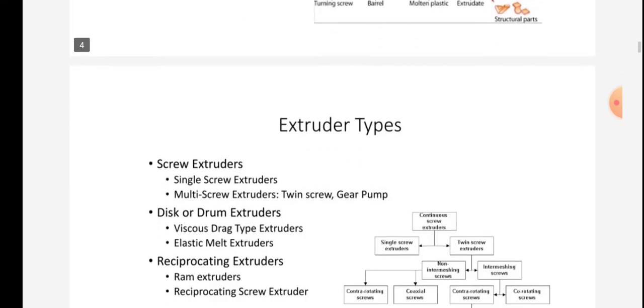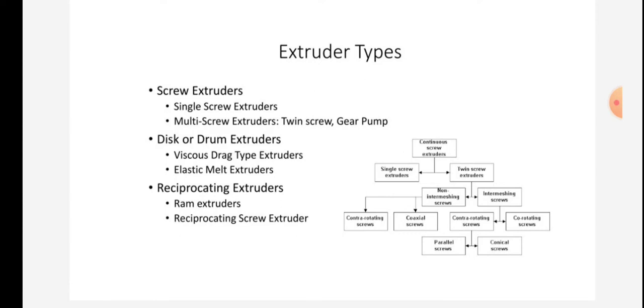Extruder types: screw extruders are classified as below. Single screw extruder, multiple screw extruders including twin screw and gear pump, disc or drum extruders, viscous drag type extruders, elastic melt extruders, and reciprocating extruders including ram extruders and reciprocating screw extruders.